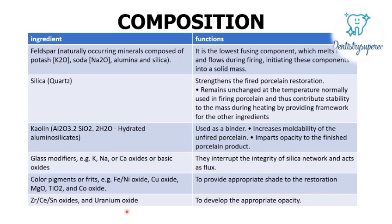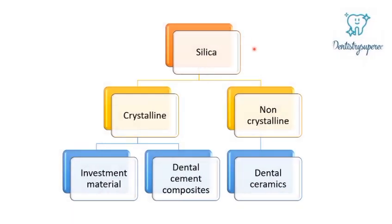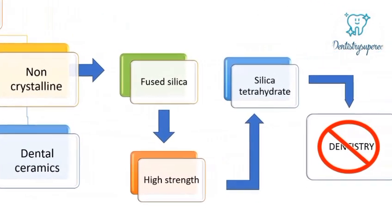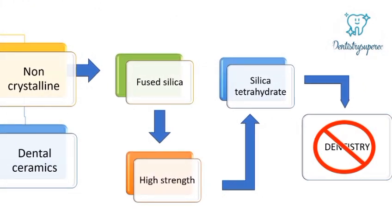Now one important thing in ceramics is its composition. Let us make it simpler by breaking it up. The basic composition of ceramic is silica, which comes in two forms: crystalline and non-crystalline. The crystalline form is mainly seen in investment materials, dental cements, and composites. The non-crystalline form is what is used in ceramic, and our point of interest is on this non-crystalline phase of silica, which is called fused silica.